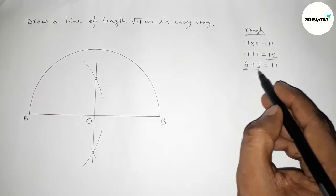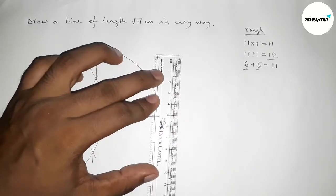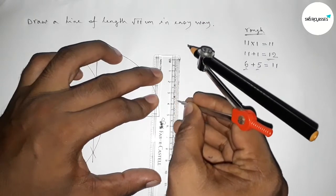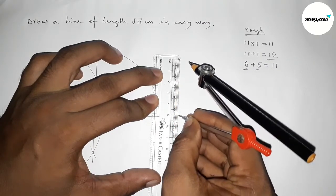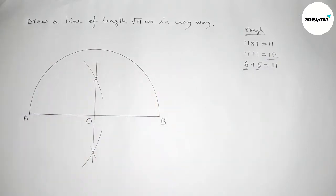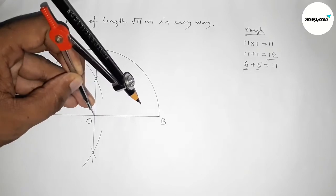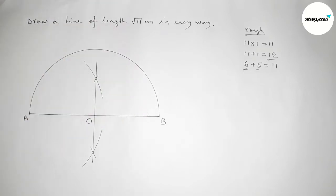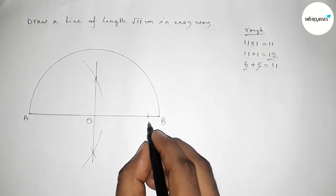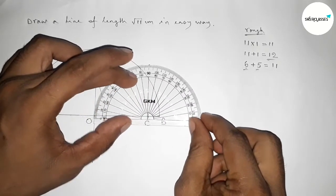Next, taking 5 centimeter by using a scale. Taking 5 centimeter length and putting the compass on point O, cutting here. Taking point C, and the length OC equals to 5 centimeter.